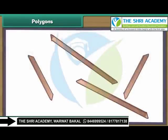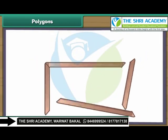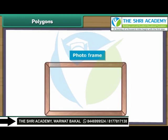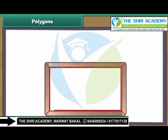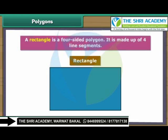We use four pieces of carved wood to create a photo frame. We have created a rectangular photo frame. A rectangle is a four-sided polygon made up of four line segments.